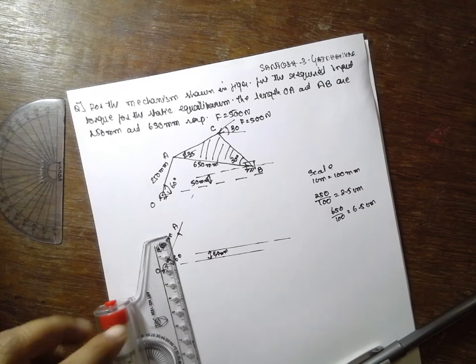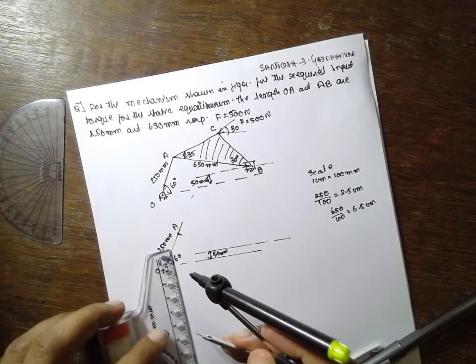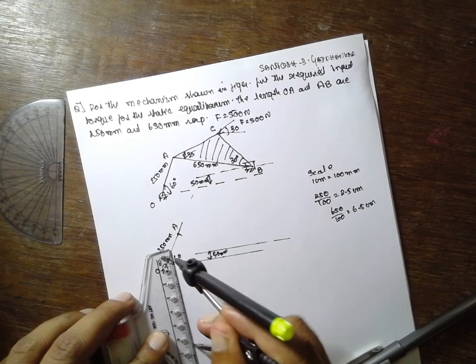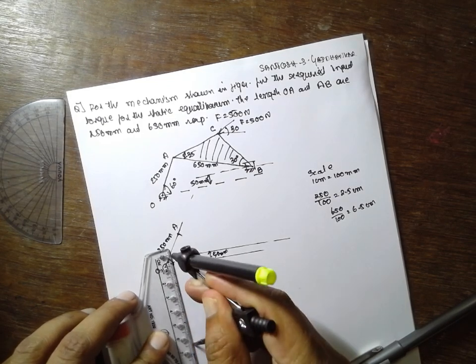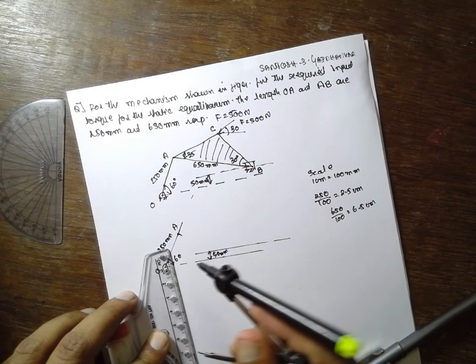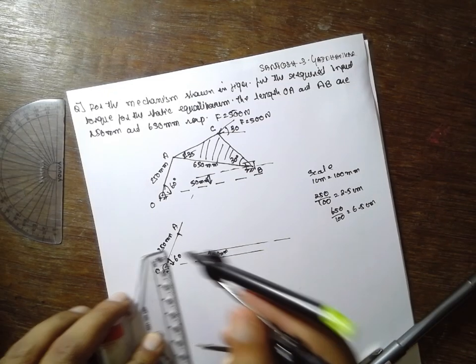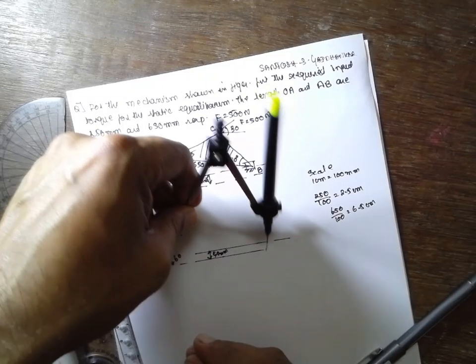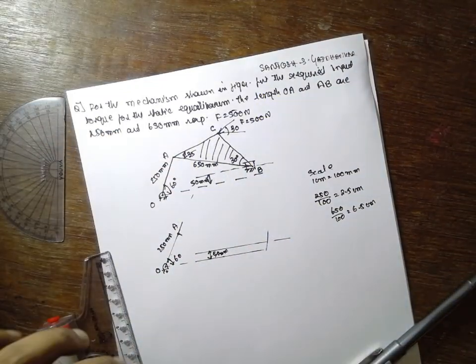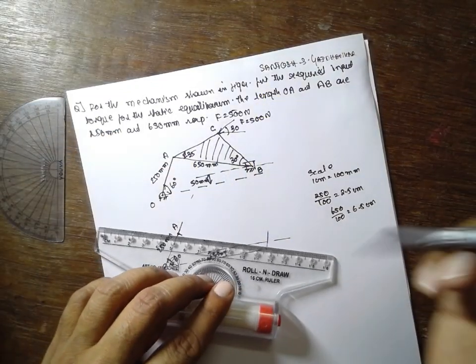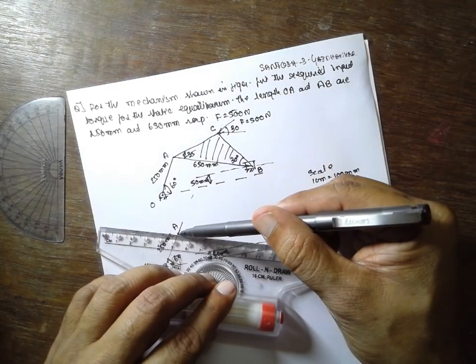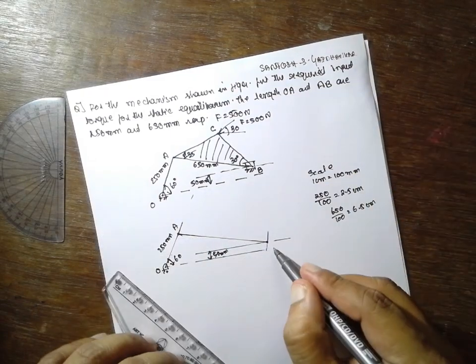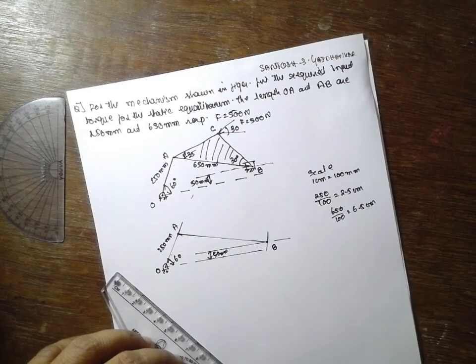Now, with the help of a compass, 6.5 cm, we will cut an arc to this line. Join. This is B. This is the piston here. I will draw later.